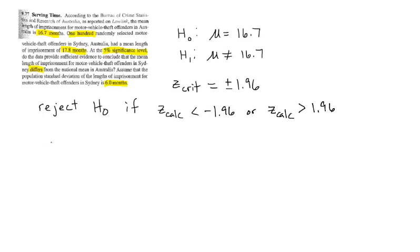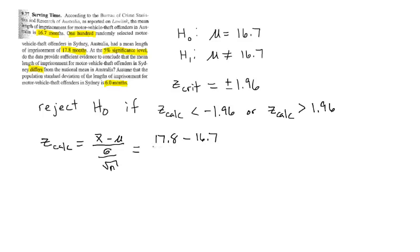Now that we have set up our rejection regions, we are going to find our Z-calc. Z-calc is equal to X-bar minus mu, divided by sigma divided by the square root of n. X-bar was 17.8, mu was 16.7, sigma was 6, and n was 100. When we put this into our calculator, we get 1.83.